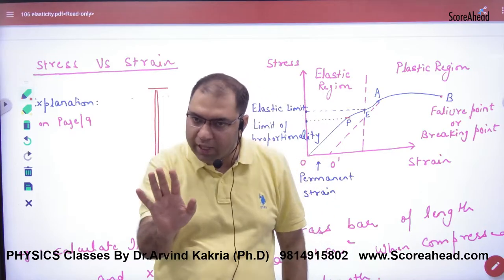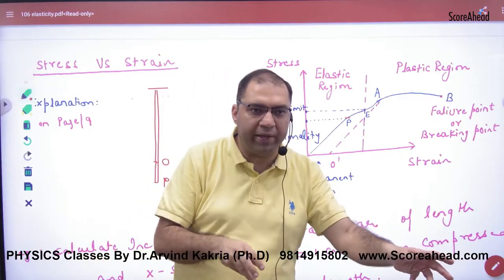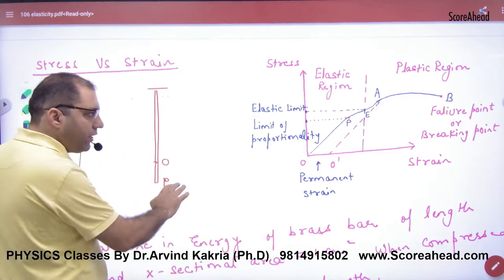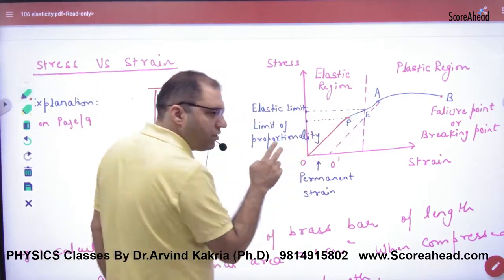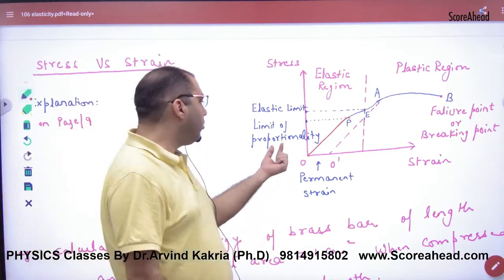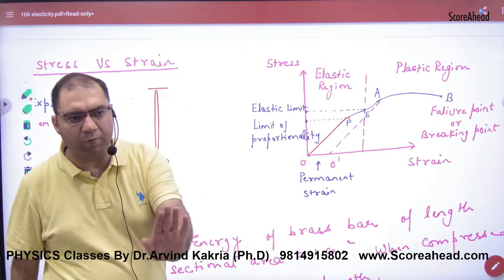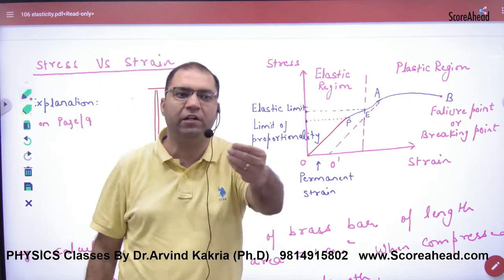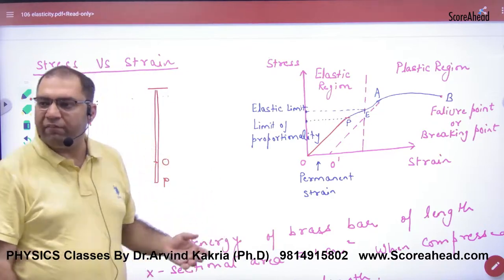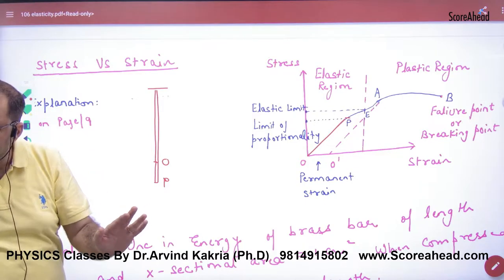After a while, this relationship fails — stress is reduced and strain starts to produce more. Up to point P, stress is proportional to strain, so the graph is a straight line passing through the origin. This is the limit of proportionality. If you release the wire from point P, it will come back to O — its original position — because it is an elastic wire.